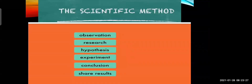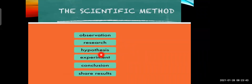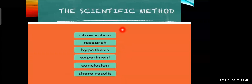Now the very important part of this lesson is the scientific method. The steps involved in the scientific method are: first, observation; second, research; third, hypothesis; fourth, experiment; fifth, conclusion; and sixth, share results. We are going to learn the scientific method with the help of one example.